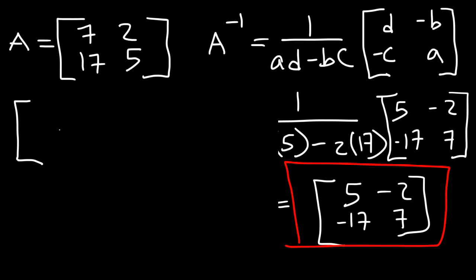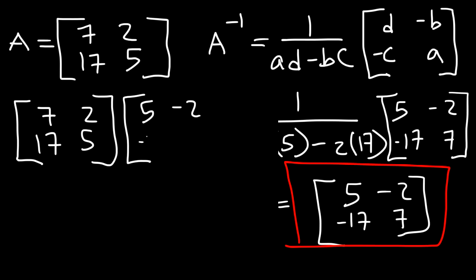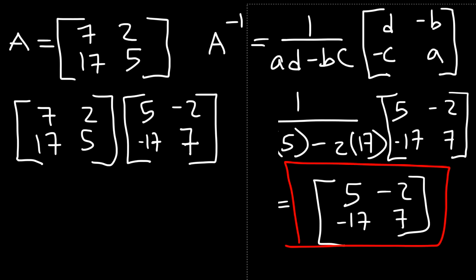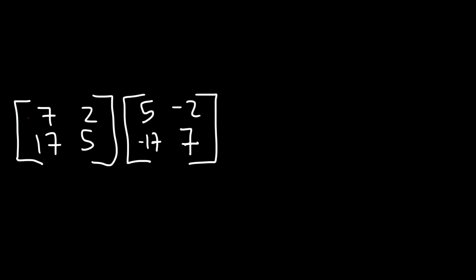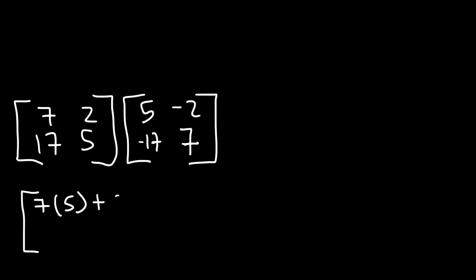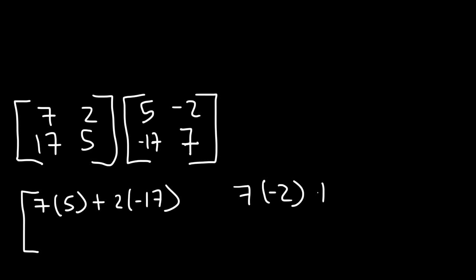Let's go ahead and multiply matrix A with the inverse of matrix A. We multiply elements in row 1 by elements in column 1 and add their products, placing the answer in the first row, first column. That's 7 times 5 plus 2 times negative 17. Then row 1 times column 2: that's 7 times negative 2 plus 2 times 7.